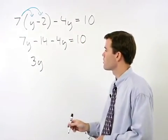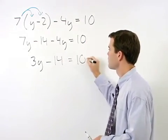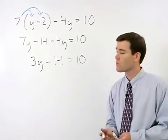So we have 3y minus 14 equals 10. And we can finish this problem in the usual way.